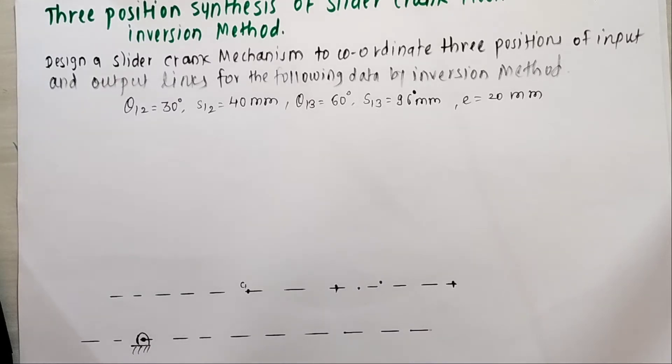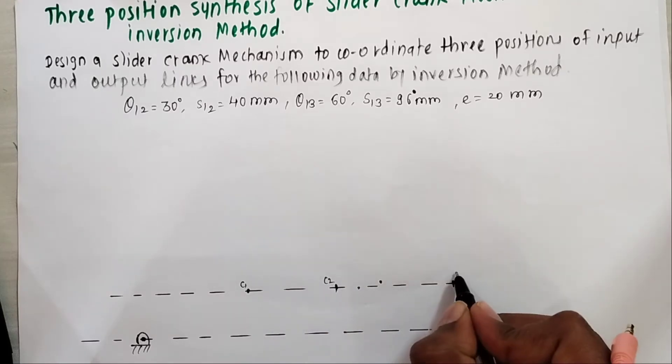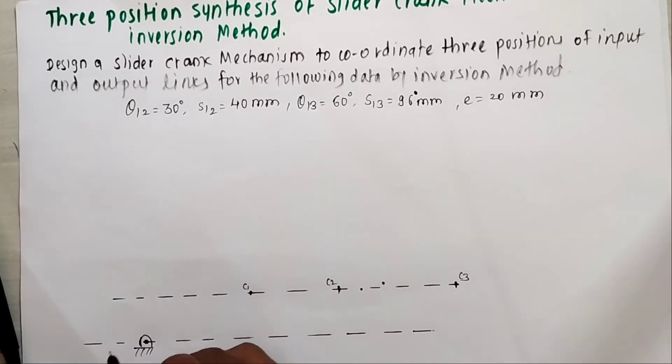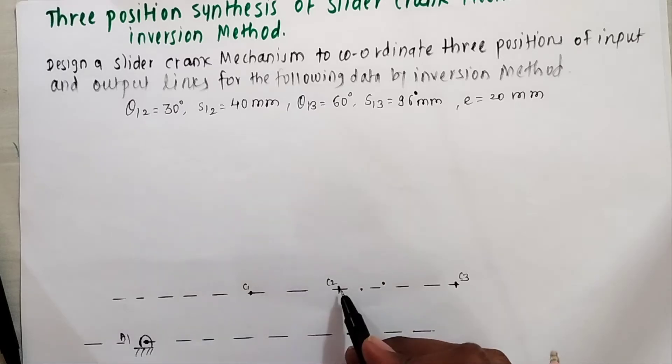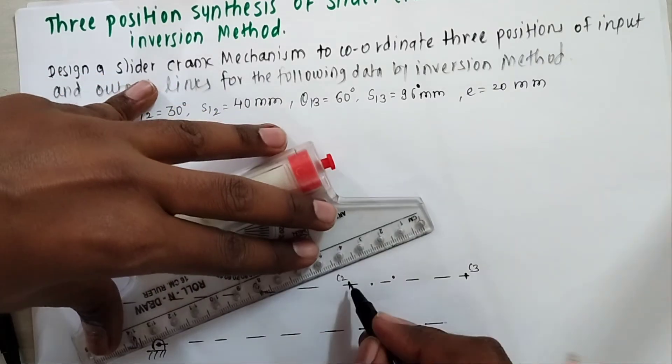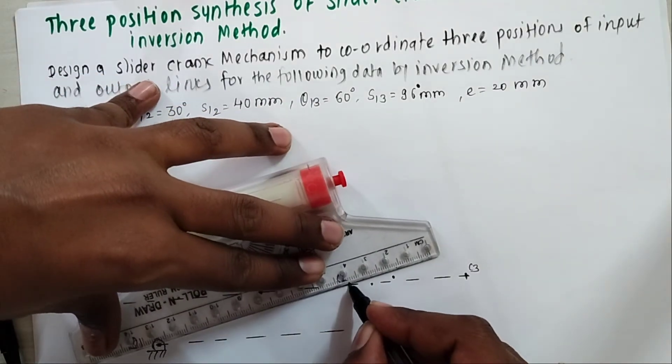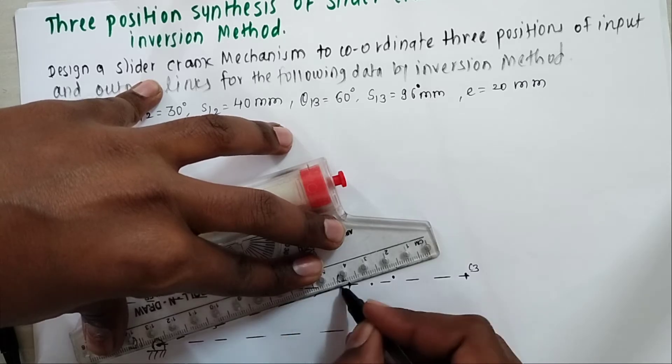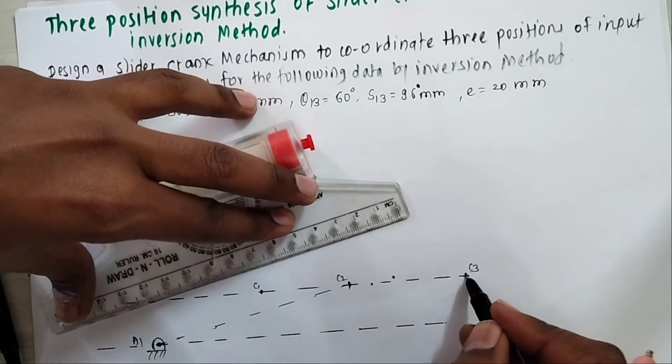Now once you get C2 and C3, I have to join A1 and C2 and A1 and C3. So I join A1 and C2, now A1 and C3.